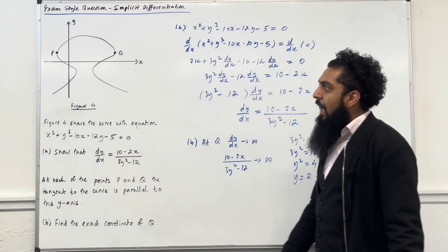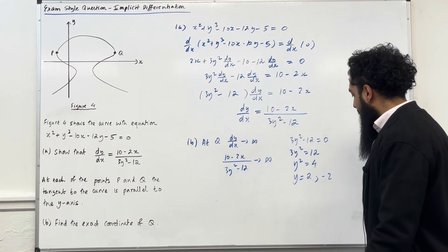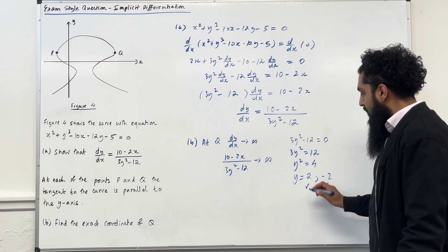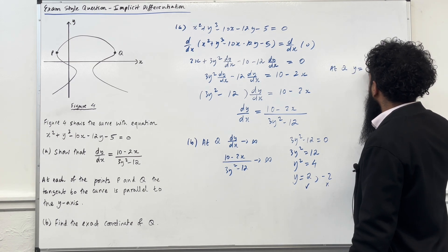Now, as you can see, at the point P and Q, the y-coordinate has to be positive. So we have to reject the minus 2, but we accept the 2. So at Q, y is equal to 2.